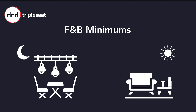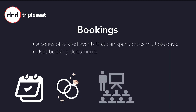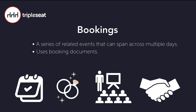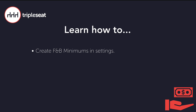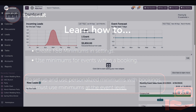Creating dynamic minimums within Tripleseat will eliminate the need to manually calculate and input a minimum amount for every booking. In Tripleseat, a booking is a series of related events that can span across multiple days and uses booking documents. We will show how to add dynamic minimums in settings and how to use them for events within a booking. To set up and use personalized minimums with bookings, you must use minimums at the event level. When minimums are created in settings, they will appear on the event level and automatically calculate and sum to the booking minimum. You also have the ability to select which menu item categories should apply to dynamic F&B minimums, which we will cover in this video.